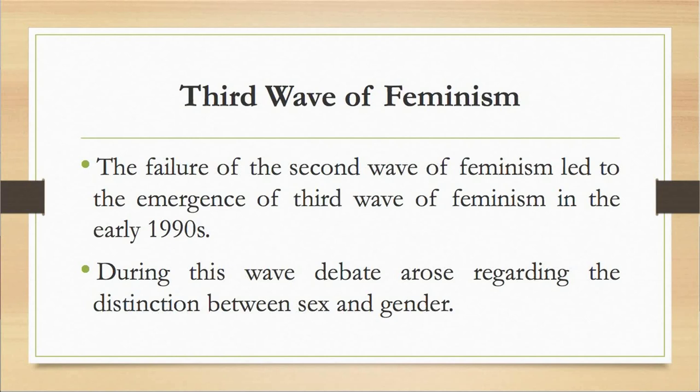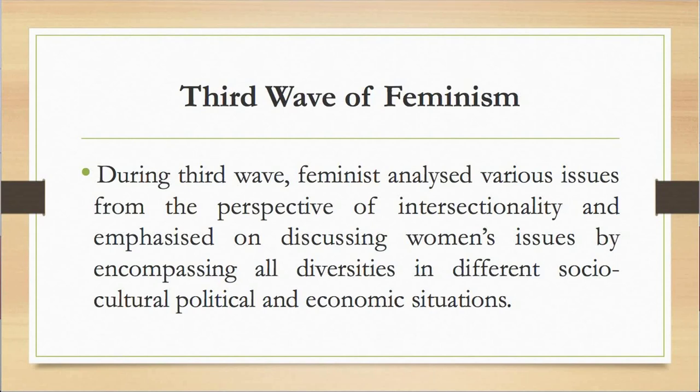During the third wave, debate arose regarding the distinction between sex and gender — whether sex is equivalent to gender. The main theme was the argument that sex is biological while gender is a socially constructed concept. Feminists also analyzed various issues from the perspective of intersectionality, which refers to the interconnected nature of various social categories like race, class, caste, and gender, which may lead to advantages or disadvantages for particular groups of people.